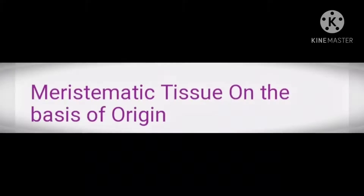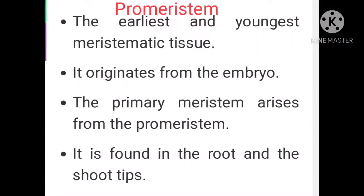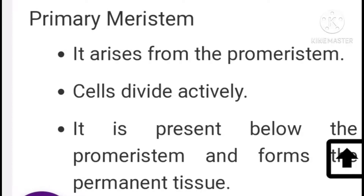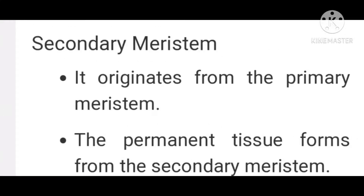Meristematic Tissue on the basis of origin. Origin ke adhaar par Meristematic Tissue teen tarah hota hai. Pahla hota hai Pro-meristem — the earliest and youngest Meristematic Tissue, originates from the embryo, and is found in the root and shoot tips. Second hai Primary Meristem — it arises from the pro-meristem, cells actively divide, and it is present below the pro-meristem; it forms near the tips of permanent tissues. Third hai Secondary Meristem — it originates from primary meristem and permanent tissues form from it.